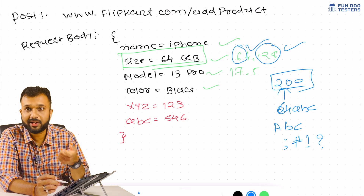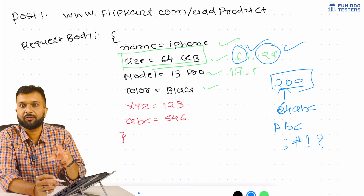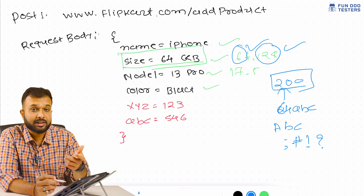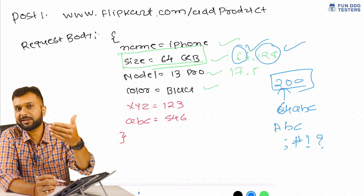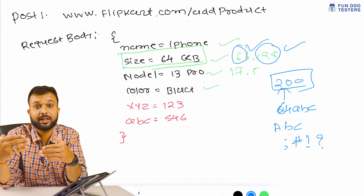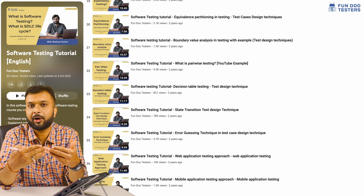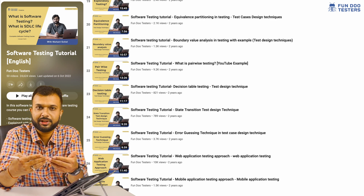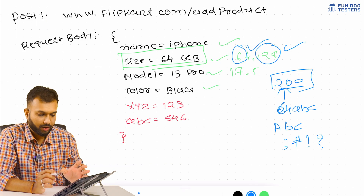For one field we can come up with multiple test cases based on error guessing techniques, boundary value analysis. If we have to apply multiple filters on a product search — like size, brand, color, pattern — we can use a pairwise technique to come up with test cases. If you don't know test case design techniques, there is a tutorial on the software testing playlist available on this YouTube channel.